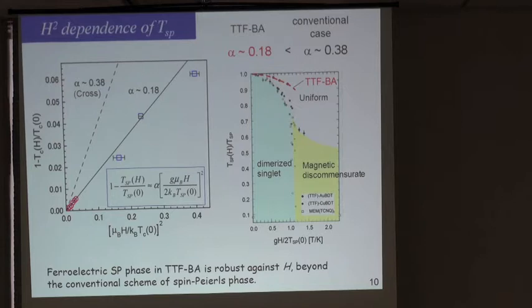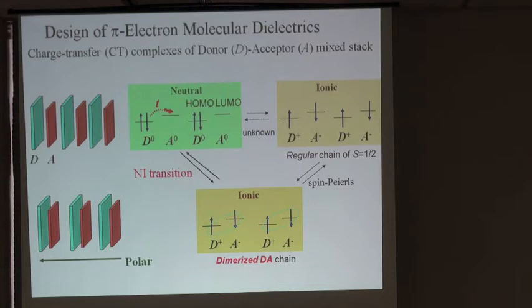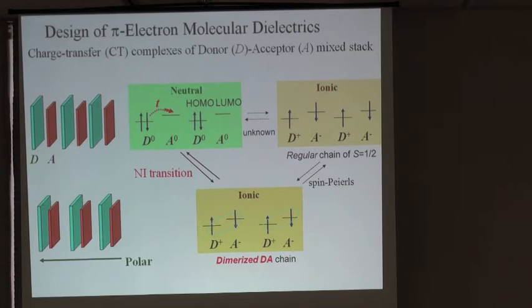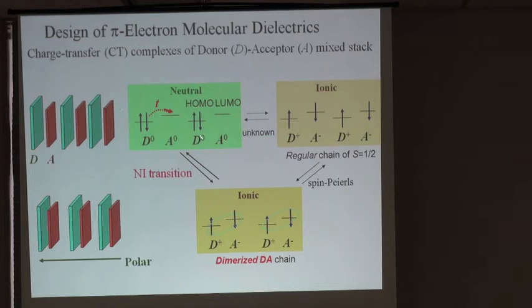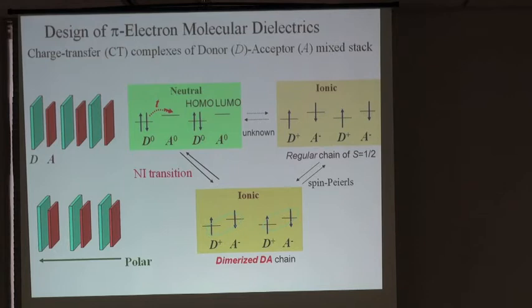Another case is the famous neutral-ionic transition system. Some donor-acceptor compounds have very low electron transfer — the neutral state, essentially a molecular van der Waals crystal. But if the electron is fully transferred (depending on ionization potential or electron affinity), it forms a Heisenberg chain — a Mott insulator. The homogeneous ionic Heisenberg chain is always subject to spin-Peierls instability, forming local singlets and becoming a polar chain. We observe the neutral state turning ionic and simultaneously ferroelectric.